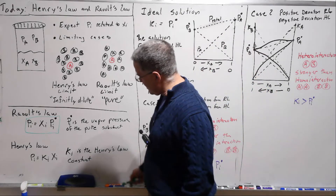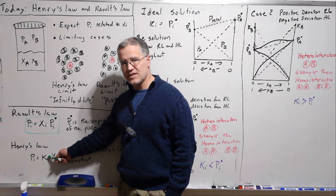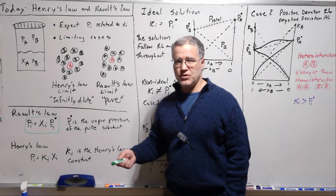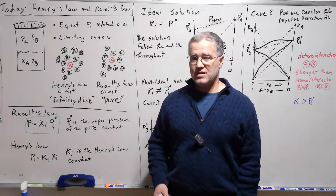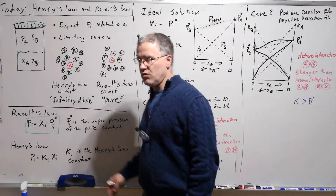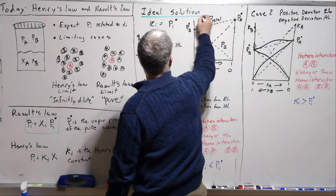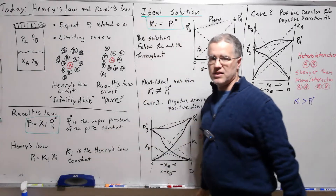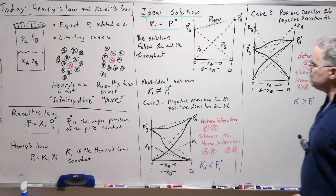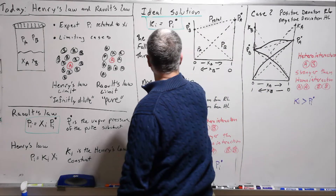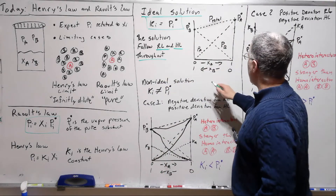If we take the mole fraction all the way to 1, the Henry's law constant would represent the pure vapor pressure. These laws only hold under the conditions of an ideal solution. In an ideal solution, the Henry's law constant equals the vapor pressure, and the solution follows both Raoult's law and Henry's law through all mole fractions.